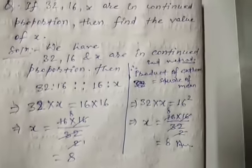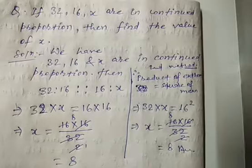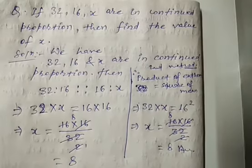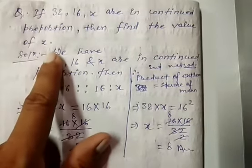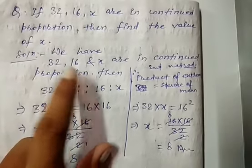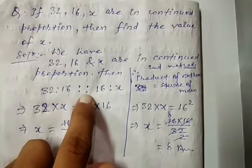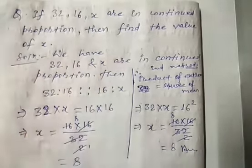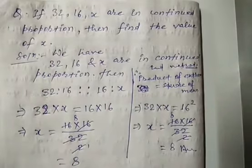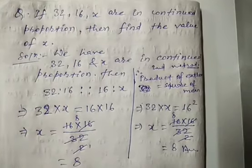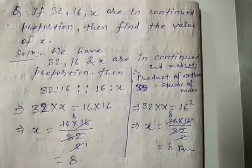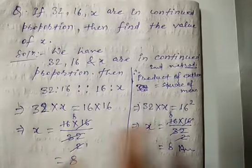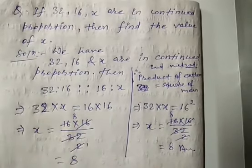Again, to recap: three quantities are said to be in continued proportion if the ratio between the first two is equal to or proportional to the ratio between the second and third. When in continued proportion, the condition is: product of extremes = square of means. Thank you for watching this video; the remaining concepts from this chapter will be continued in the next part.